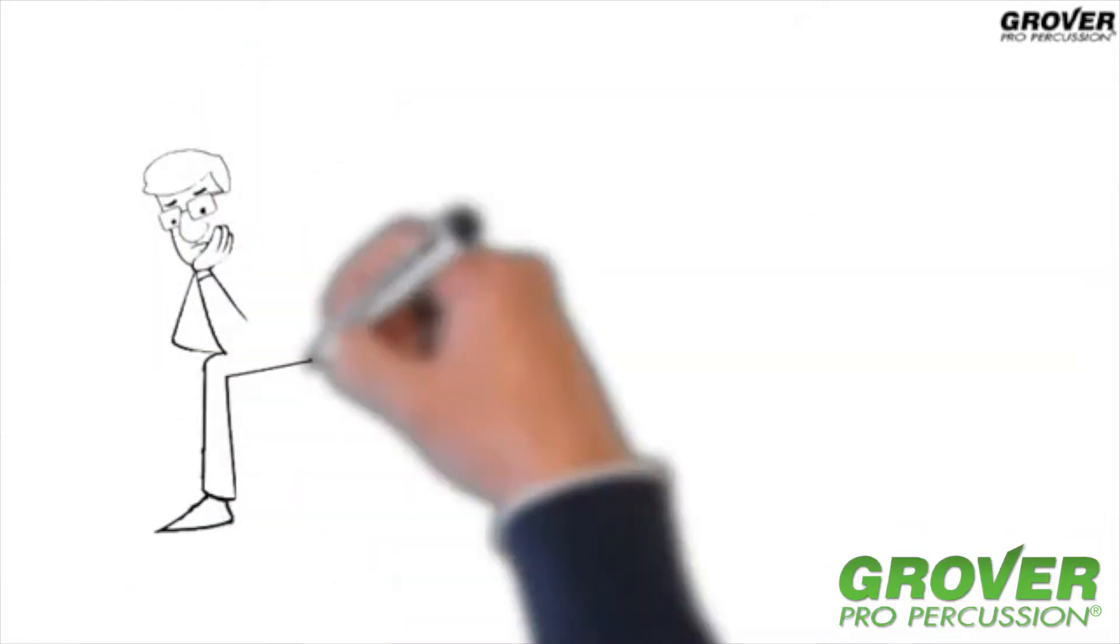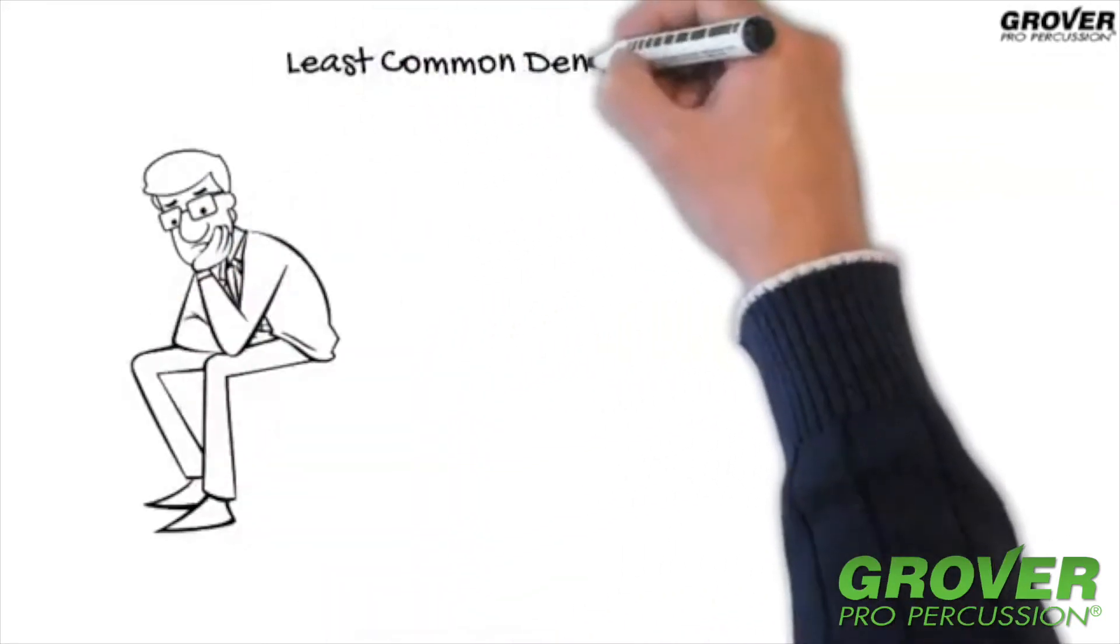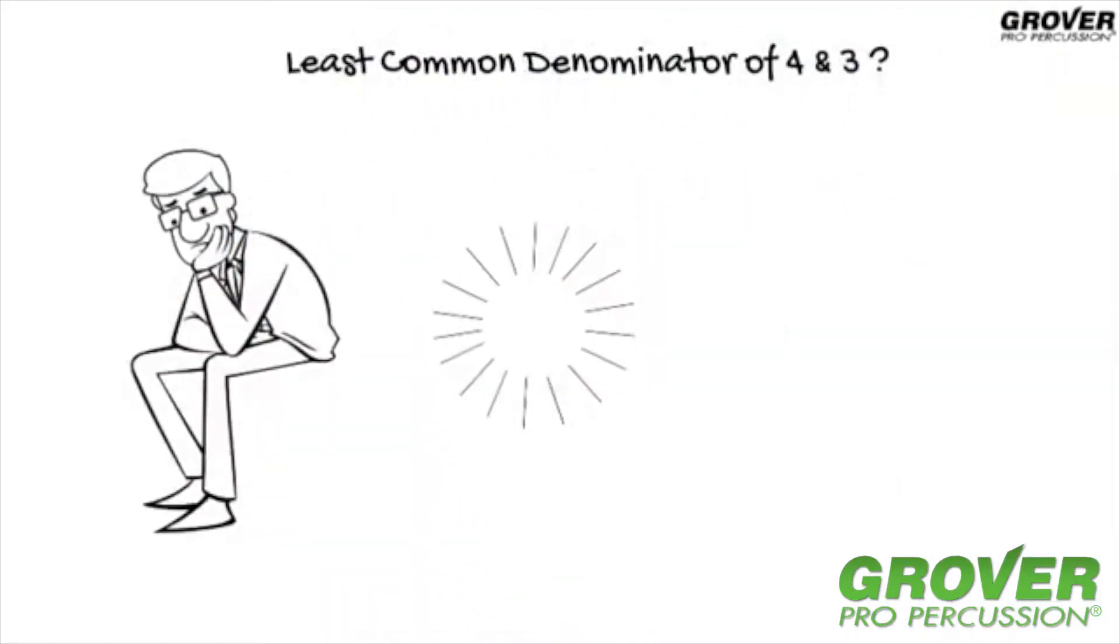The first step is to find the least common denominator of 4 and 3. The answer is 12. The least common denominator is represented by 12 sixteenth notes.